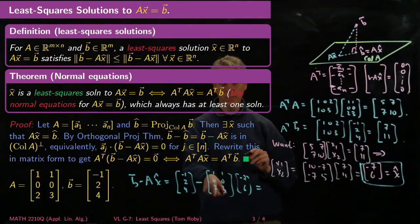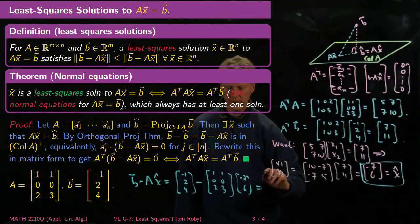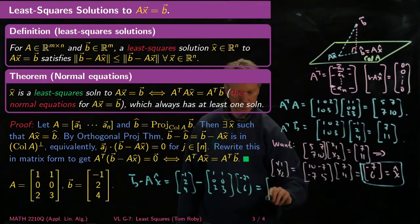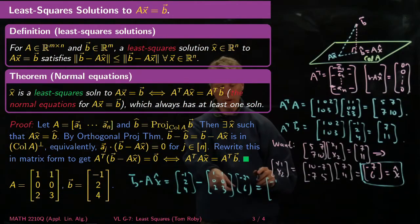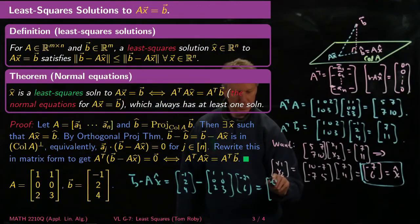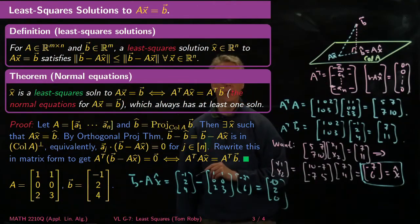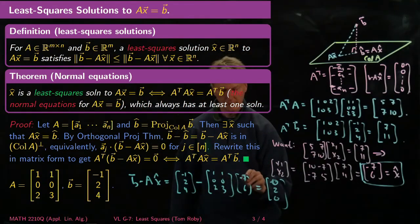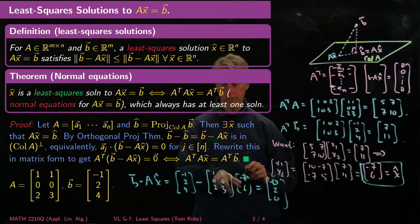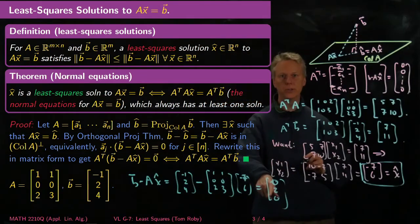And so then when I subtract from this, I end up getting [0, 2, 0]. So this vector is [0, 2, 0].